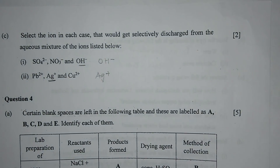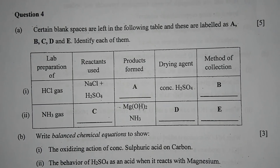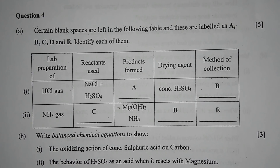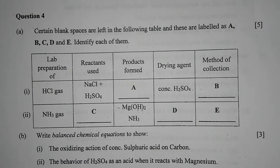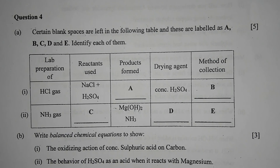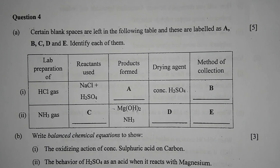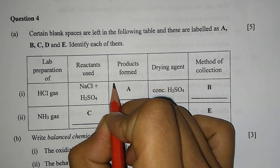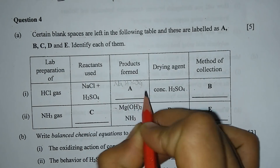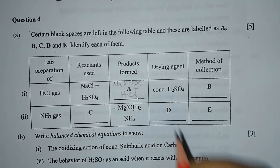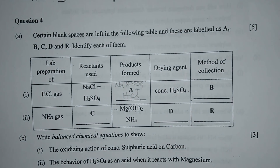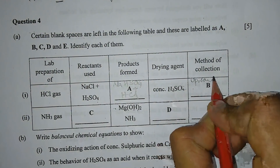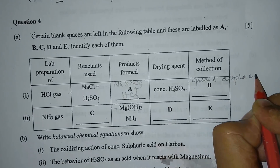Question 4a: certain blank spaces are left in the following table labeled A, B, C, D, and E. Number 1 — lab preparation of HCl gas: the reactants are NaCl and H2SO4; the products are sodium hydrogen sulfate and HCl; the drying agent is concentrated sulfuric acid; and the method of collection is upward displacement of air.